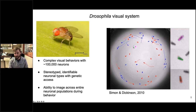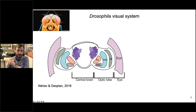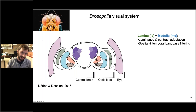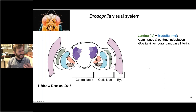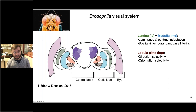A brief introduction to the Drosophila visual system: visual information first enters the retina and the eye, shown here in pink. From there, information travels to two neuropils called the lamina and the medulla, shown in green and blue. In these regions you start to see things like luminance and contrast adaptation and neuronal receptive fields with spatial-temporal bandpass filtering — these are kind of like retinal ganglion cells in the vertebrate visual system.